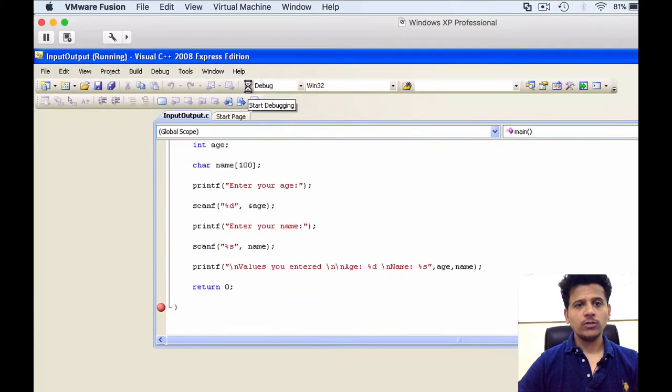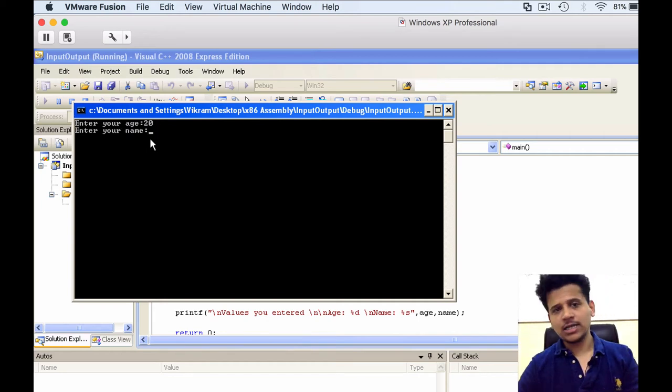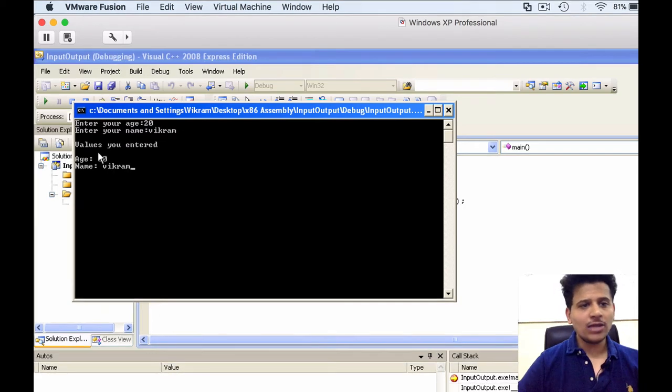To run, click on this play icon. So it's asking enter your age, let's type it 20. After that it's asking name, let's enter my name Vikram. The values which we have entered are outputted by the program age 20 name Vikram.